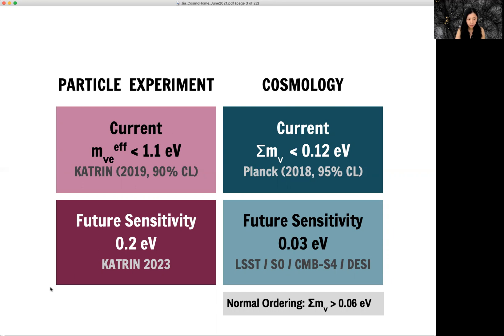In the next decade, we expect improvement on both fronts. From particle experiment, the Katrina experiment is taking data until 2023. And the expected sensitivity from Katrina will be 0.2 EV, which is order of magnitude improvement from the current constraint from the same experiment.